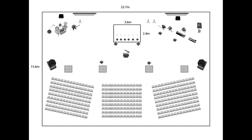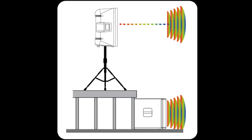Two, angle and height. Angle the speakers towards the audience to direct the sound towards them. This can help improve clarity and projection. For elevated stages, consider placing the speakers at an appropriate height to avoid obstruction and to provide better coverage.